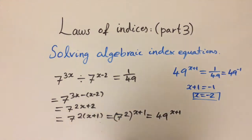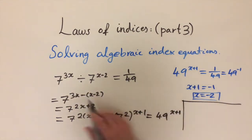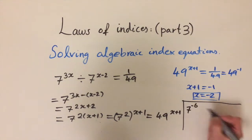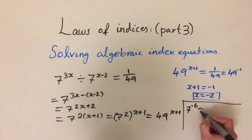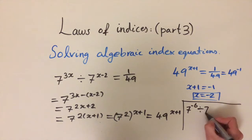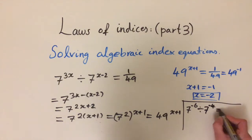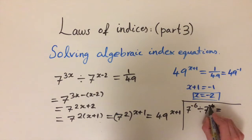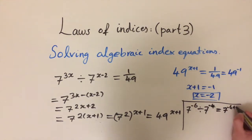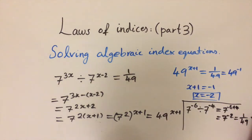Let's verify by substituting x equals minus 2 into the original equation. 7 to the power of 3 times minus 2 is 7 to the minus 6, divided by 7 to the power of (minus 2 minus 2), which is 7 to the minus 4. Using the law of subtraction: minus 6 minus (minus 4) gives minus 6 plus 4 equals minus 2, so we get 7 to the power of minus 2, which is indeed 1 over 49. The solution is correct.